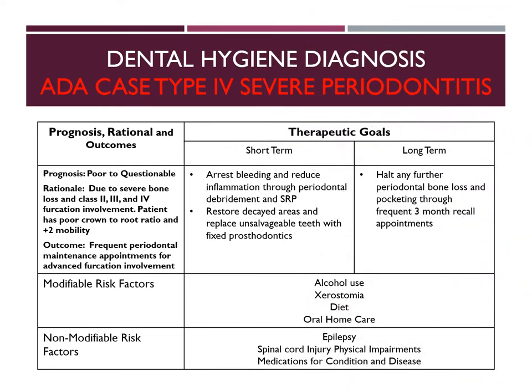For dental hygiene diagnosis: because my patient suffers from case type 4 severe periodontitis, the prognosis is poor to questionable. The rationale is due to severe bone loss and furcation involvement of class 2, 3, and 4. The patient also has poor crown-to-root ratio and grade 2 mobility. Frequent periodontal maintenance appointments will be our outcome for the advanced furcation involvement.